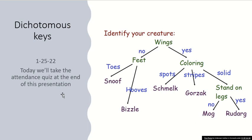So what is a dichotomous key? A dichotomous key is something that we use to help us identify organisms that we find, typically in the field. However, they can also be used to identify things that you might have in a museum that has been collected and preserved as well.